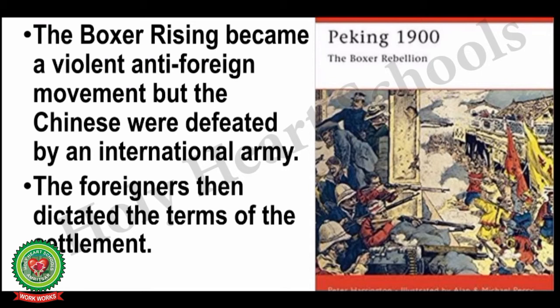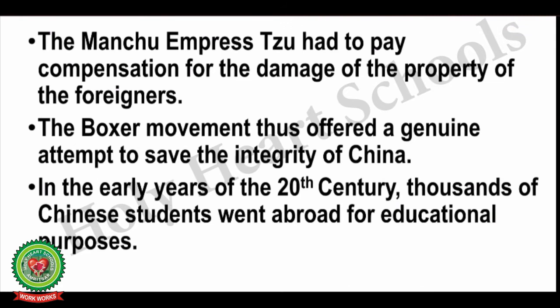The Boxer Rising was the first ever rising against foreign powers — unlike the Taiping Rebellion, which was by provincial rulers against the central government. The Boxer Rising was crushed by an international army, and the foreigners forced the Chinese government to accept their terms. The Manchu Empress had to pay compensation for damage to foreigners' property. The Boxer movement thus offered a genuine attempt to save the integrity of China.